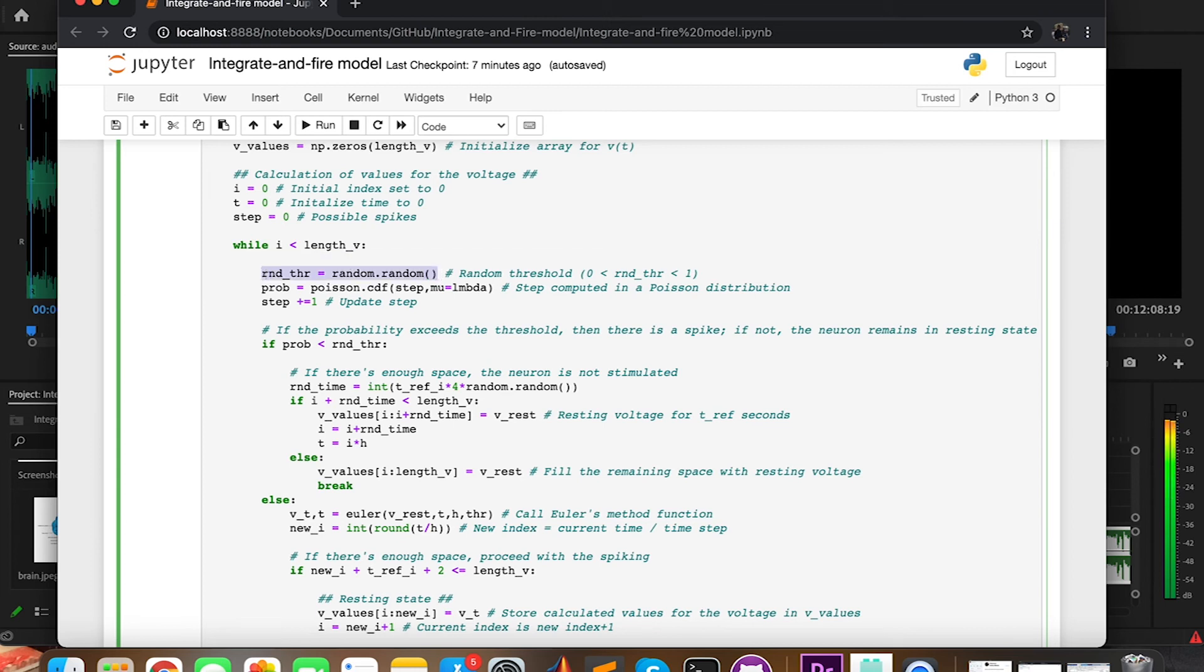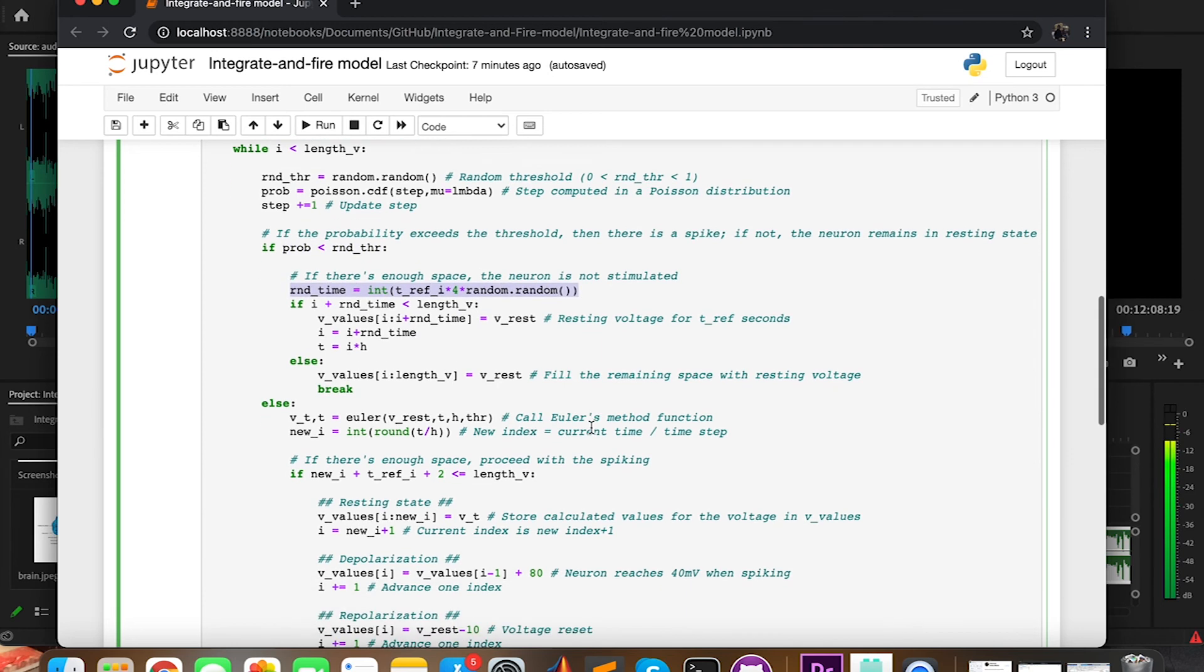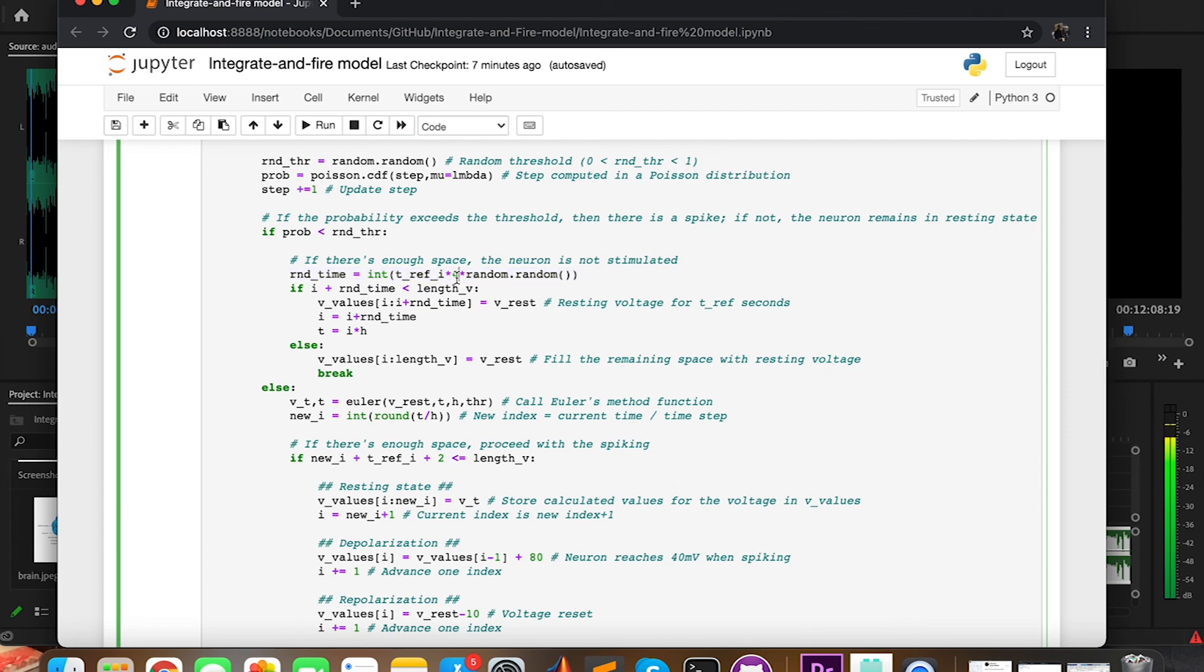We first generate a random threshold between 0 and 1. We then generate the probability following Poisson distribution with mu as lambda. We increase step by 1 because now we are at the first potential spike, that is the potential spike number 1. And then if the probability of the Poisson distribution is less than the random threshold, then the neuron is not stimulated. So we generate a random period of time in which there is no stimulation. We say here that it has to be a number between 0 and 4 times the refractory time.